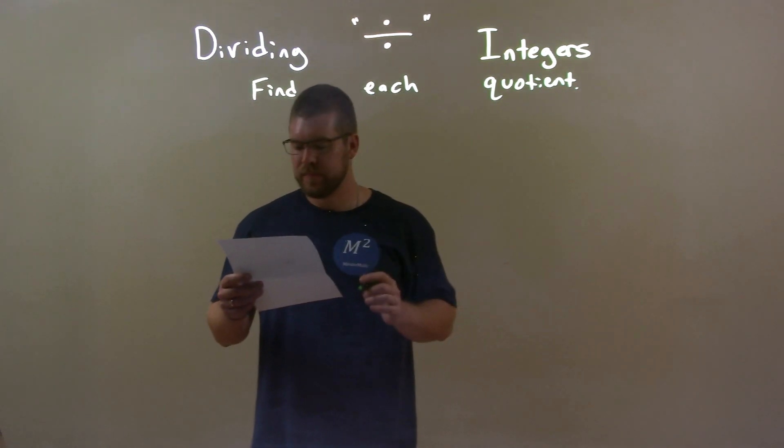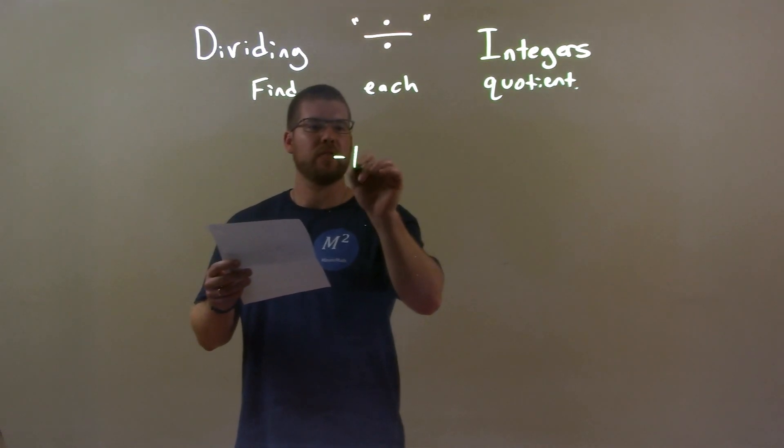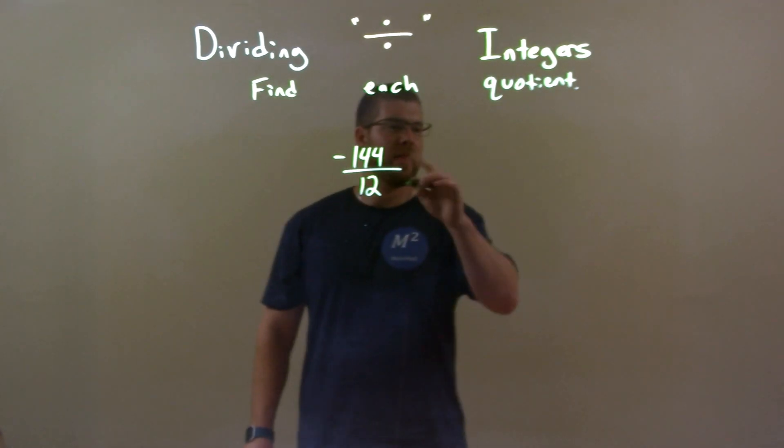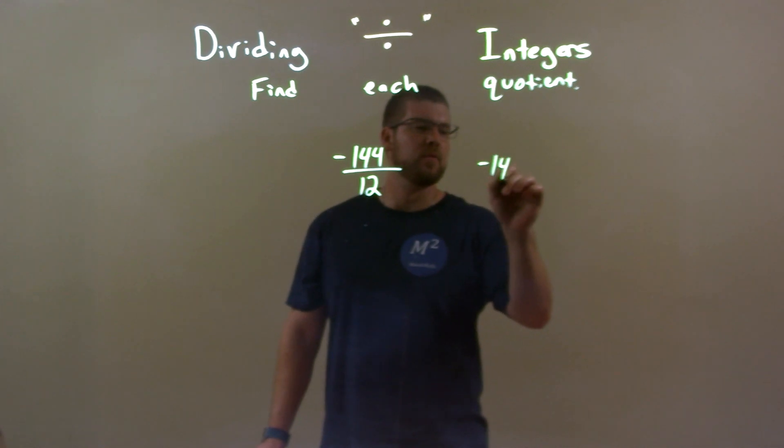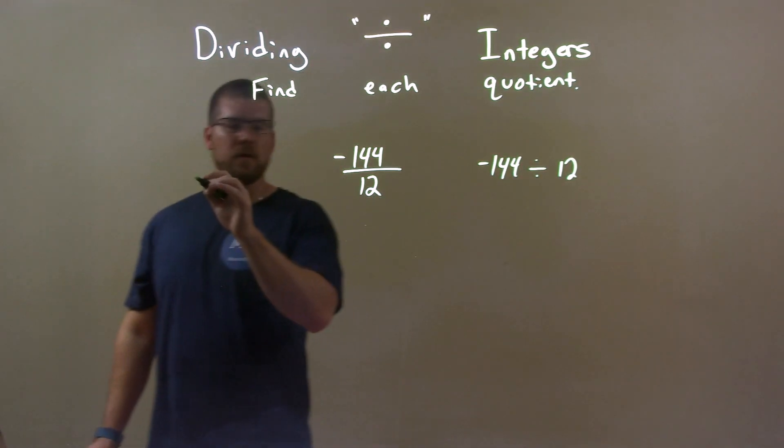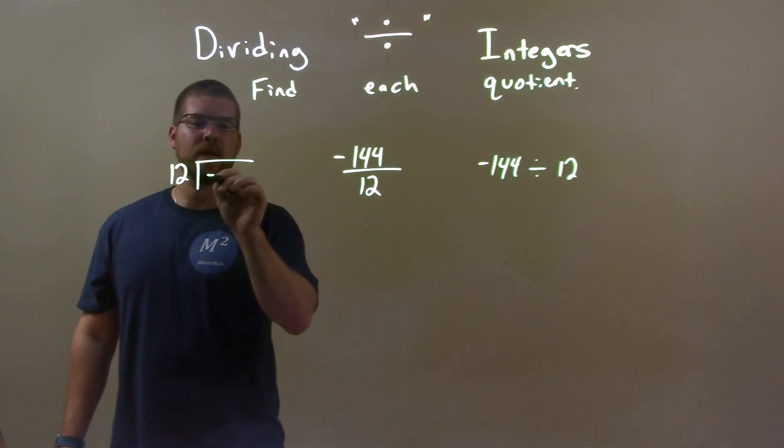So if I was given these integers, negative 144 divided by 12. Well we know that that's the same thing as writing it like this, 144 divided by 12 or 12 goes into negative 144.